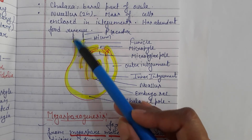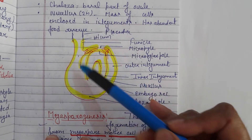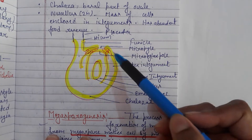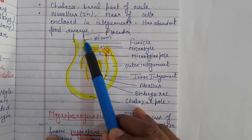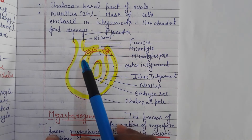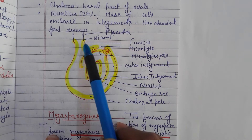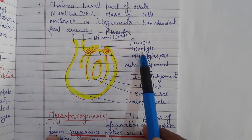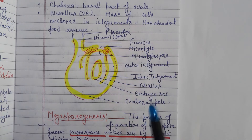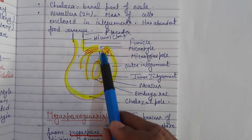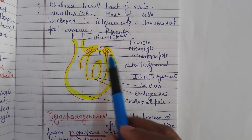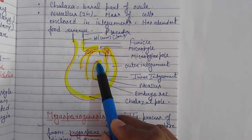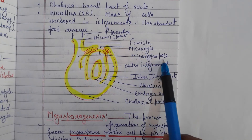Looking at the diagram: at the top is the placenta, which transfers food from the mother to the baby. Then comes the hilum — the connecting link between the funicle and placenta — and then the funicle. The ovule has two ends: micropyle and chalazal. The micropyle has a small pore from which the pollen grain or pollen tube enters the ovule. The micropyle end is also called the polar end.